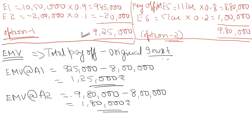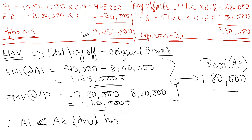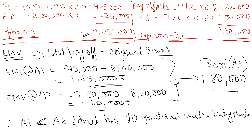Comparing both options — A1 (restaurant) gives 1 lakh 25,000 and A2 (ready-made dress showroom) gives 1 lakh 80,000. Therefore, A2 should be selected as 1 lakh 80,000 is greater. Anil has to go ahead with the ready-made dress showroom. Thank you, have a nice day.